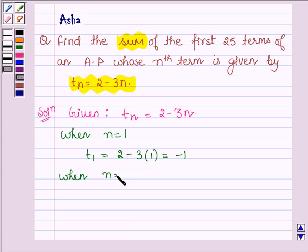When n is equal to 25, then the 25th term is given by 2 - 3(25) which is equal to 2 - 75 which is further equal to -73.